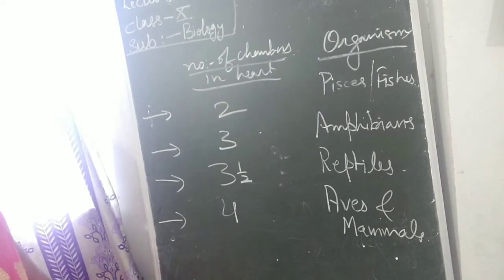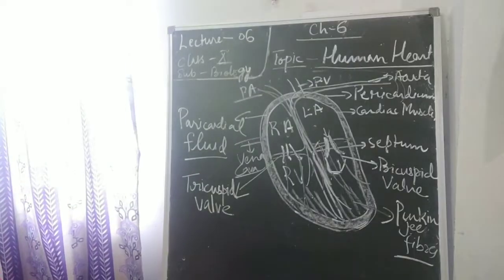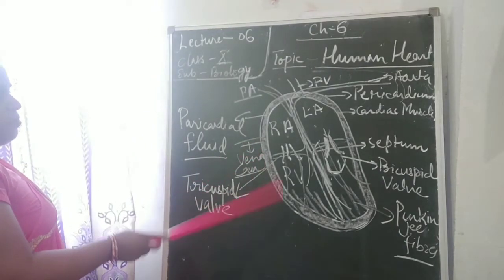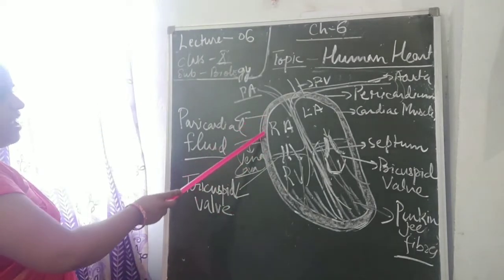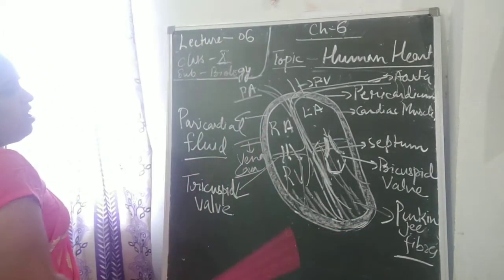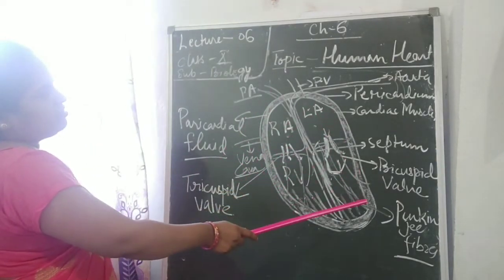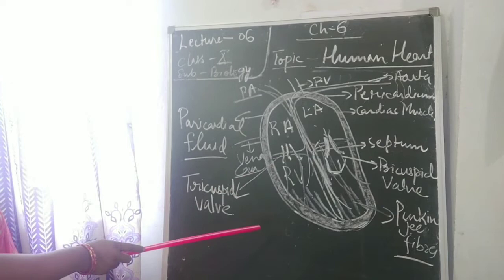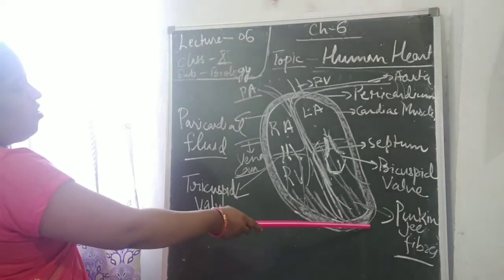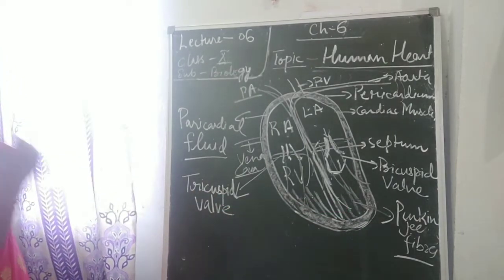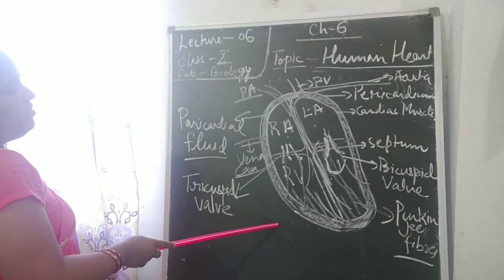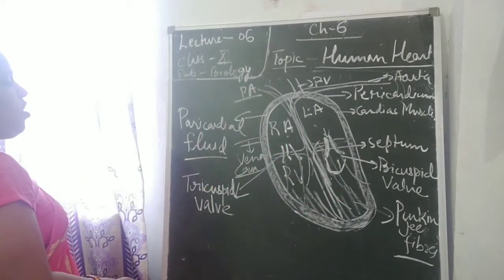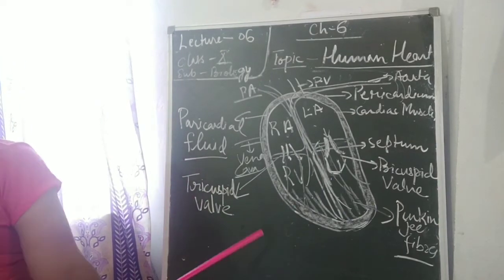Now let's discuss the structure of the human heart. The human heart is not a proper triangle — it is oval in shape and slightly shifted towards the left side, which gives it a somewhat triangular appearance. As it is present in the thoracic cavity and shifted towards the left, the left lung is also quite smaller than the right lung.